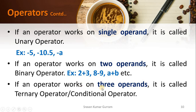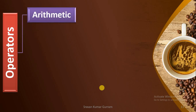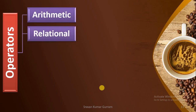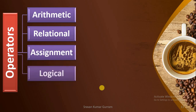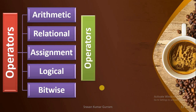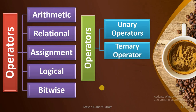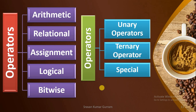The third type is: if an operator works on three operands, it is called a ternary operator or conditional operator. We will see this conditional operator in the coming sessions. Let us now see the complete list of operators in Java: arithmetic operators, relational operators, assignment operators, logical operators, and bitwise operators. Almost all of these are binary operators, and in addition we have a few unary operators, a ternary operator, and some special operators. We will discuss these one by one in the coming videos.